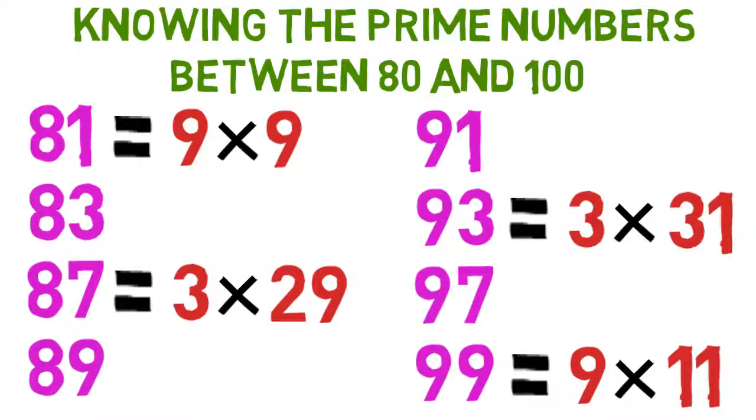Additionally, 91 equals 7 times 13, and is therefore not a prime number. The remaining three numbers,